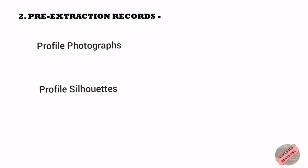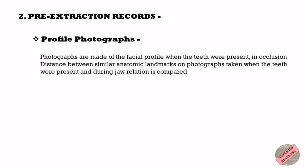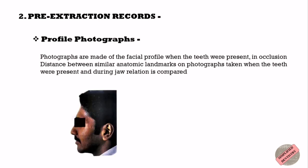Pre-extraction records can be maintained using profile photographs, profile silhouettes, radiographs, articulated casts, and facial measurements. For profile photographs, photographs of the facial profile are made when the teeth were present in occlusion. These are enlarged to life size, and similar photographs are made during recording of jaw relations with the rims in occlusion. The distance between similar anatomic landmarks on the photographs taken when the teeth were present and during jaw relation recording is compared, allowing verification of the occlusal vertical dimension.